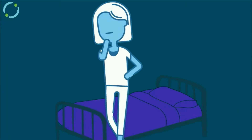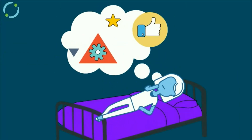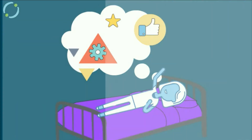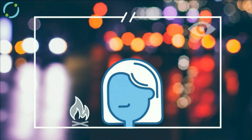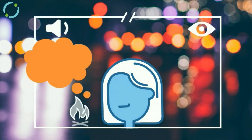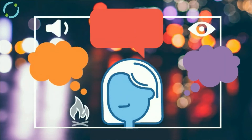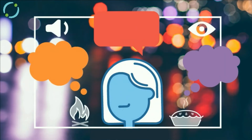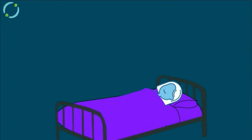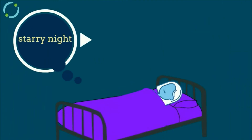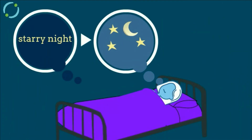What do your thoughts look like before you fall asleep? Hypnagogia, the transitional state between wakefulness and sleep, is associated with imagery or sensory thoughts rather than literal or verbal thoughts. As we start to fall asleep, our thoughts become more and more pictorial, free-ranging and abstract.